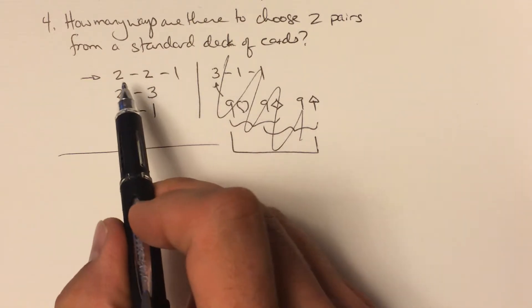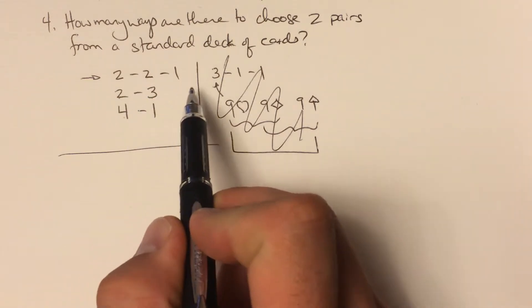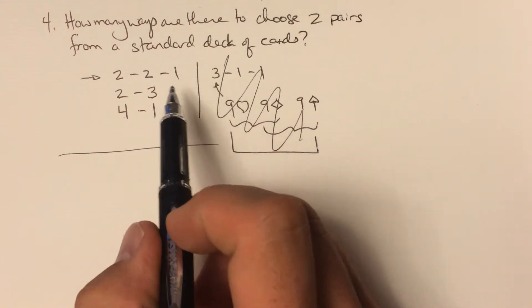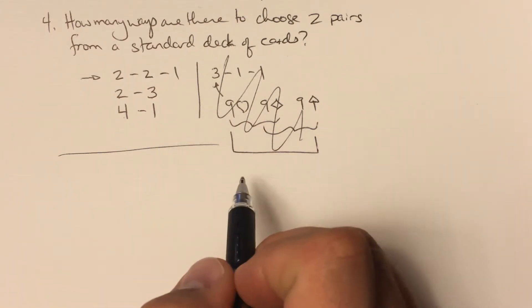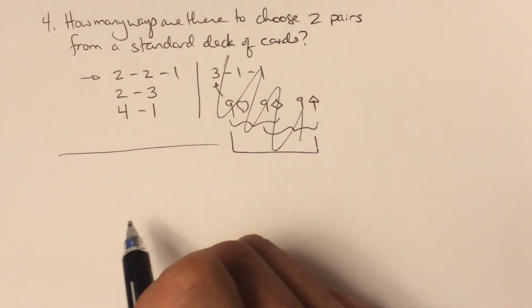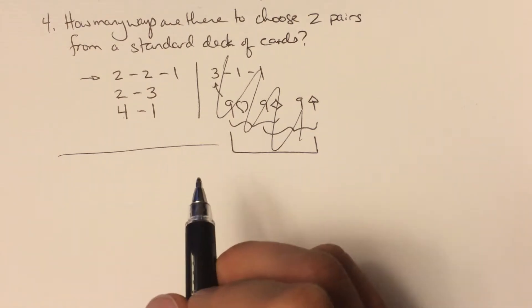We're going to count all these cases by selecting cards and then we have to divide by the number of orders we could pick those cards in as we go.